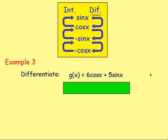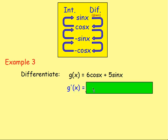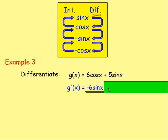Example three: Differentiate g(x) = 6cos x + 5sin x. Here once again you don't have x in the bottom of a fraction, you don't have any roots, so you can go straight into differentiation. Differentiating, we get g'(x). The 6 is a constant, it stays as 6. Cos goes to negative sin, so you'd have negative 6sin x. And the positive sin x goes to positive cos x, so we'd have plus 5cos x.